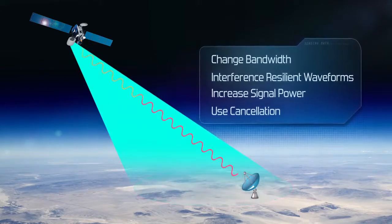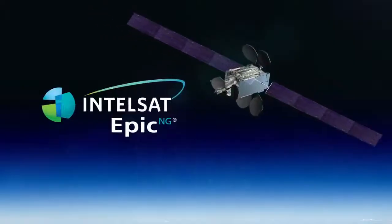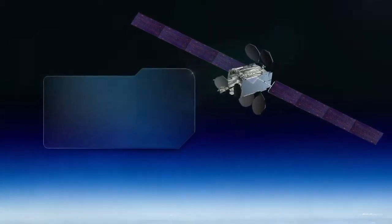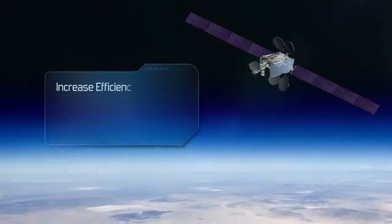They also use cancellation to block interference. Intelsat EPIC satellites are designed and equipped with a technologically advanced digital payload design to increase efficiency, as well as prevent jamming and mitigate interference.